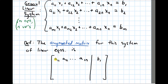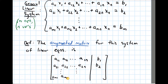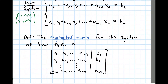All I'm doing is copying down the constants that appeared in each equation — none of the variables. For the second equation I write a sub 2,1, a sub 2,2, dot dot dot, a sub 2,n, and on the right hand side of the augmented bar I put b sub 2. Continuing down to the last equation: a sub m,1, a sub m,2, dot dot dot, a sub m,n, with b sub m on the right of the augmented bar.